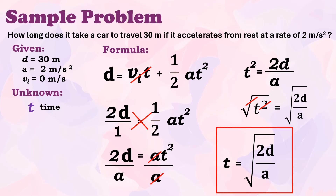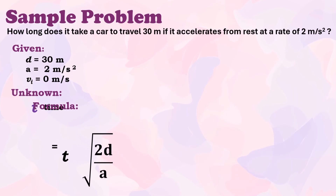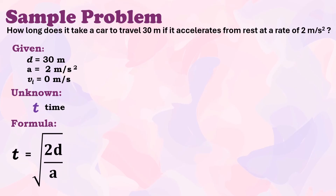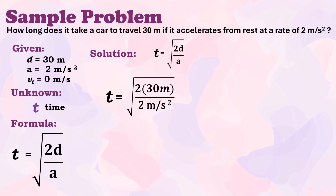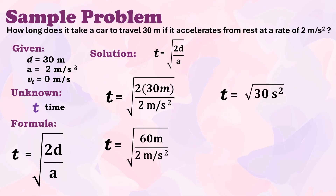Now we proceed with the solution. Time = √(2 × 30 m ÷ 2 m/s²). So 2 × 30 = 60, divided by 2 m/s² = 30 s². The square root of 30 is 5.48 seconds.